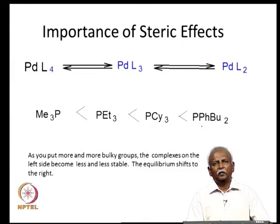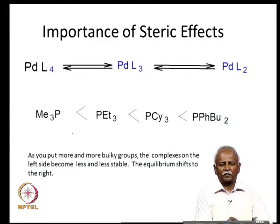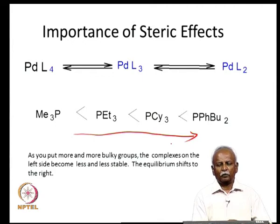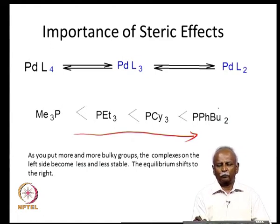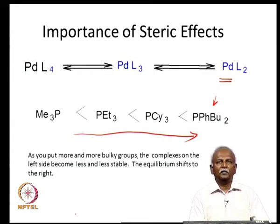Surprisingly, even with palladium, where the metal is much larger, the same effect is retained. As the size of the ligand attached to the metal atom increases, one tends to form more and more of the dissociated complexes. For the largest ligand, the metal complex present in solution is predominantly a PdL2 system. Although they are in equilibrium, the amount of dissociated complex increases as the ligand size increases. This makes a difference in chemistry: if you want to do chemistry with a PdL2 complex, you would prefer to use larger ligands.